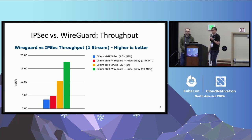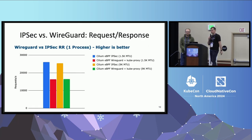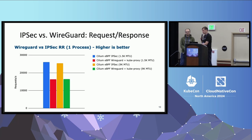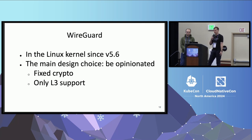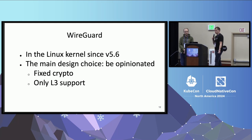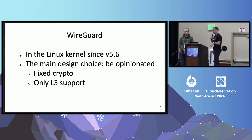In some cases WireGuard is better than IPSec — for example, if you consider applications which need more throughput. In other cases, IPSec behaves better than WireGuard, such as applications that need more request-response. But it's on you to decide. This talk is more focused on WireGuard, just because the scope was too broad to cover both in 35 minutes. I will cover what WireGuard is, how it is configured typically, and how it is configured in Cilium. Then Daniel will cover the performance part.